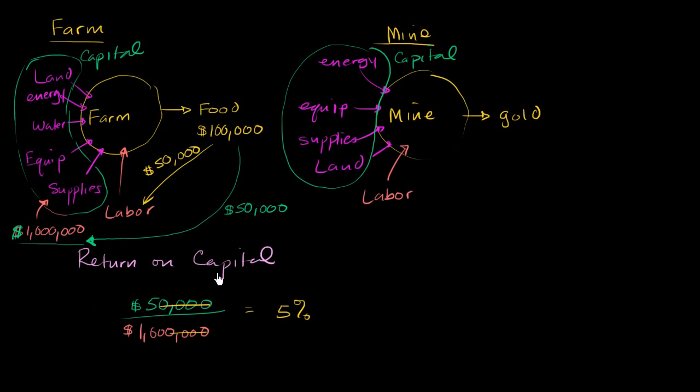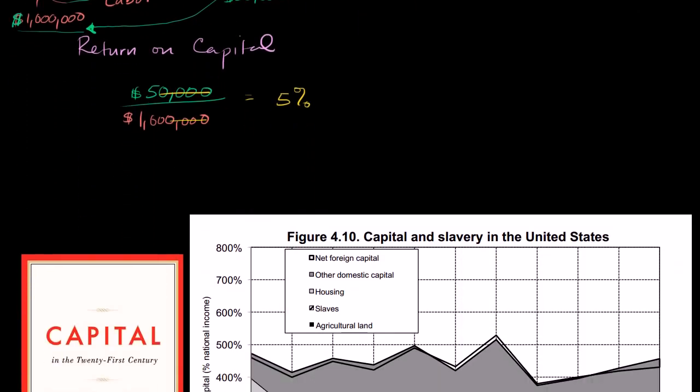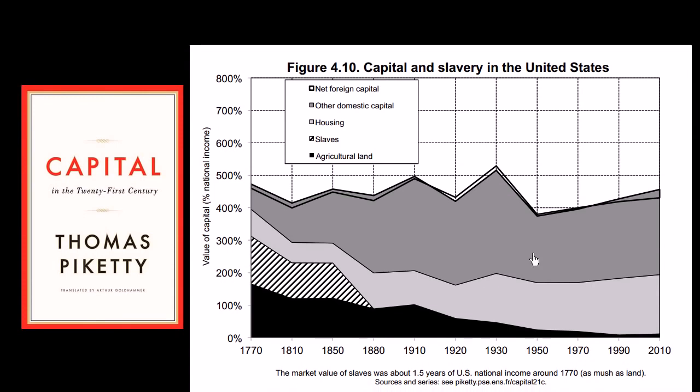Now that we've kind of thought about that a little bit, let's actually look at a pretty neat chart from the book. And once again, if you look right over here at Piketty dot PSE dot ENS dot FR capital 21C, he has all the charts from his book, which make for interesting analysis at minimum. And he's gathered all of this information. This is pretty interesting.